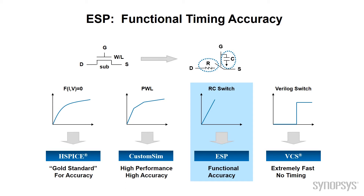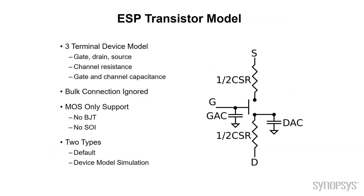ESP is a simple switch model with a resistance and capacitance. This works great for digital design, allows us to work with self-timed logic, and can also resolve drive fights. Let's look in more detail at this ESP transistor model.